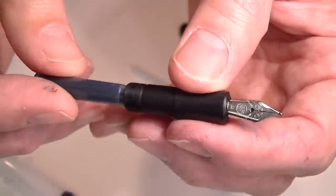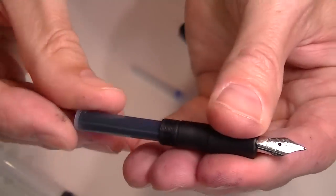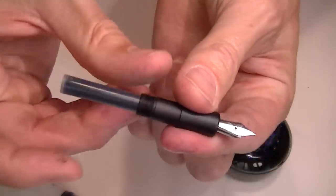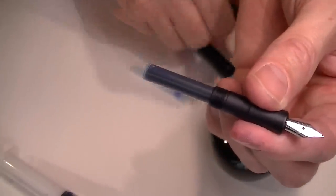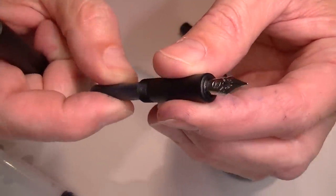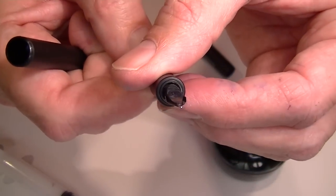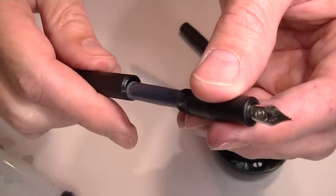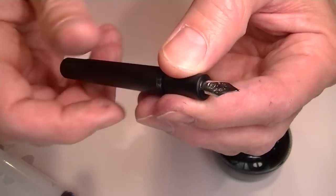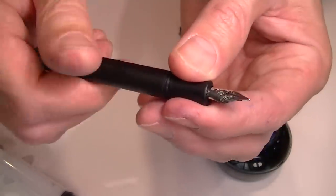So we're going to go ahead and take that ink we're going to attach it to our nib and I like to prime that a little bit squeeze the cartridge just a little bit see if we can get a little ink flowing up through the nib section and you can go ahead and put your pen together and use it.